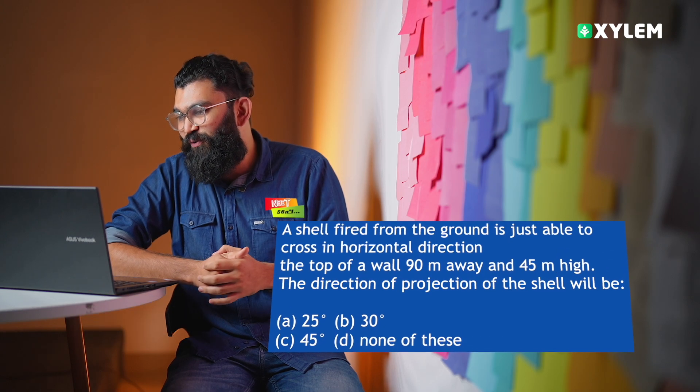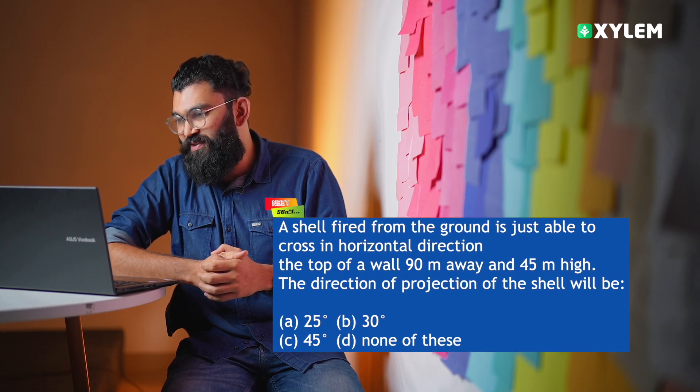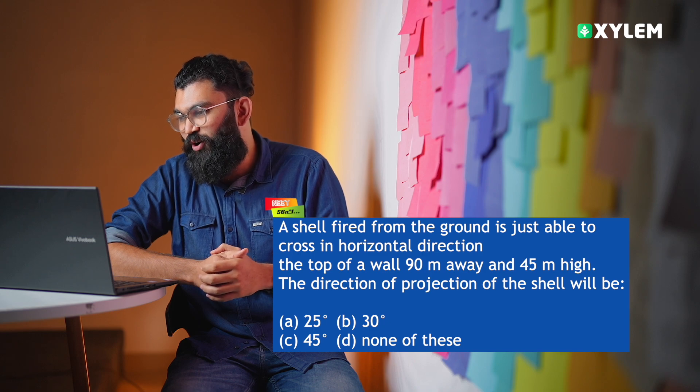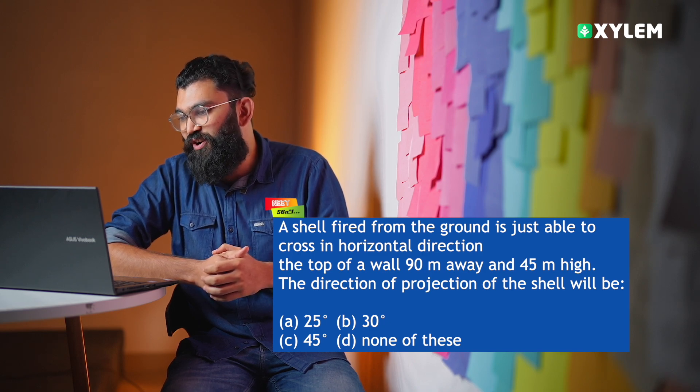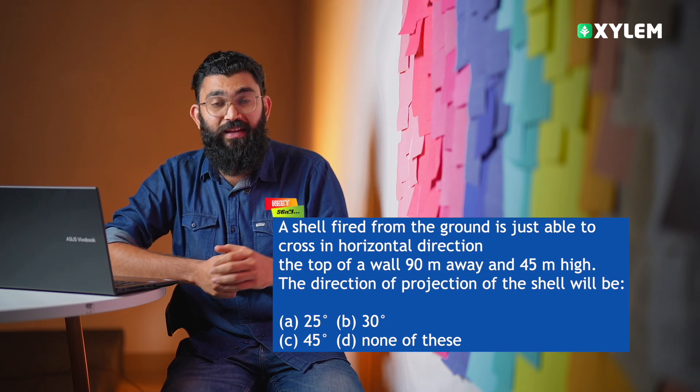Question from projectile motion. A shell fired from the ground is just able to cross in horizontal direction the top of a wall 90 meter away and 45 meter high. The direction of projection of the shell will be.